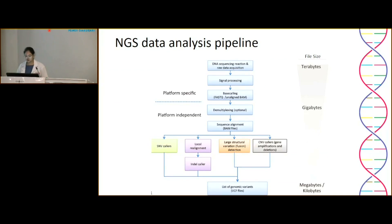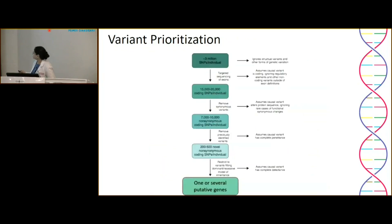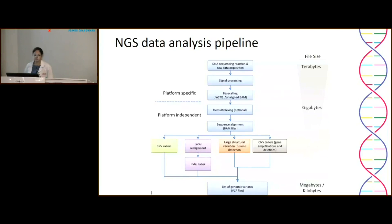Once the signal is processed, you get the raw file in FASTQ format. After multiple quality scoring and filtering steps, you get the BAM file, which is aligned with the reference genome. Multiple tools are then used to identify different types of genomic variations — different tools for single nucleotide variations and for copy number variations. These are integrated to give a VCF file, which is a readable CSV file. Initially terabytes of data are compressed into kilobytes.